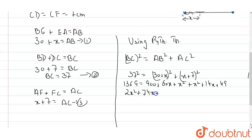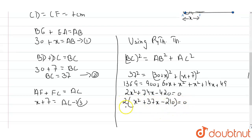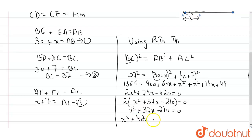Taking 2 as common gives x squared plus 37x minus 210 equals 0. Now we apply middle term splitting: we rewrite 37x as 42x minus 5x, giving x squared plus 42x minus 5x minus 210 equals 0.